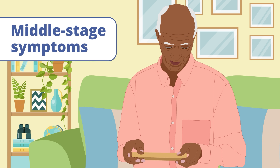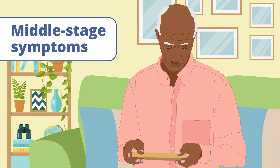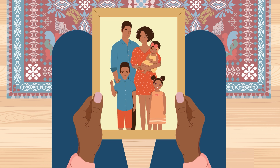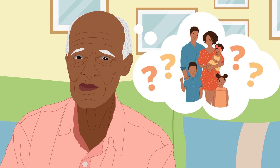Middle stage symptoms: As the disease worsens, people with Alzheimer's may forget how to do daily tasks, such as brushing their teeth or combing their hair, have trouble recognizing family and friends, and experience emotional outbursts.